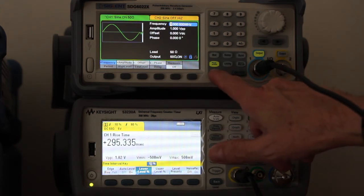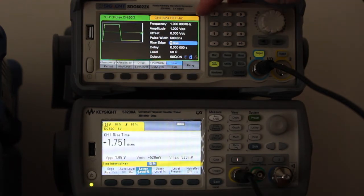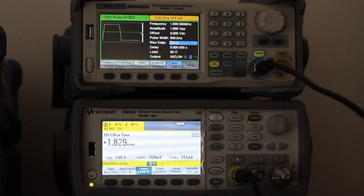Let's set the output to pulses. We have here one megahertz, one volt peak to peak, and 2 nanoseconds of rise time. 2 nanoseconds is the minimum.